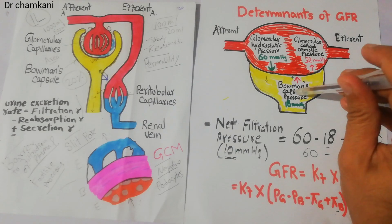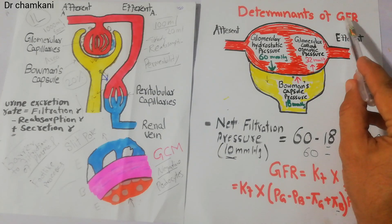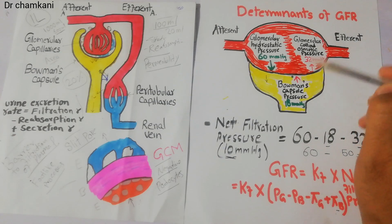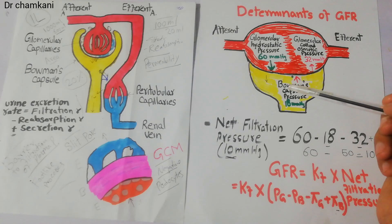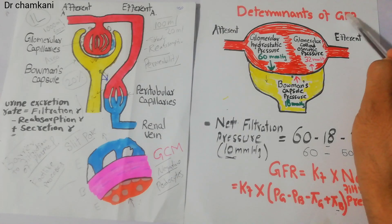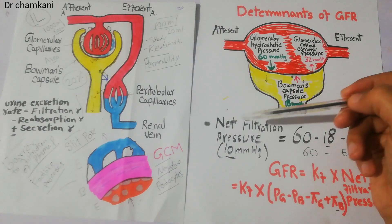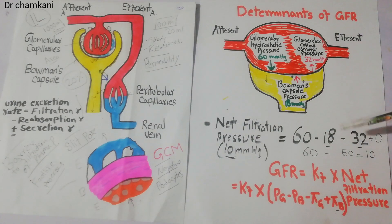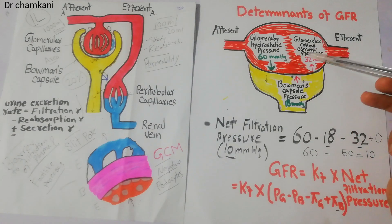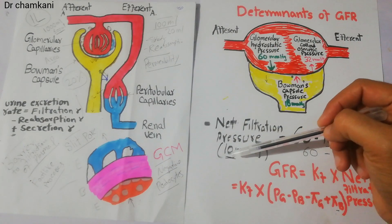If Bowman's capsule hydrostatic pressure increases, it will decrease the filtration rate and decrease the GFR. But if this pressure decreases, it will increase the GFR. Normally its value is 18 mmHg. We also discussed this when calculating the net filtration pressure — we had to subtract 18 and 32 from 60, which gave a net filtration pressure of 10 mmHg.